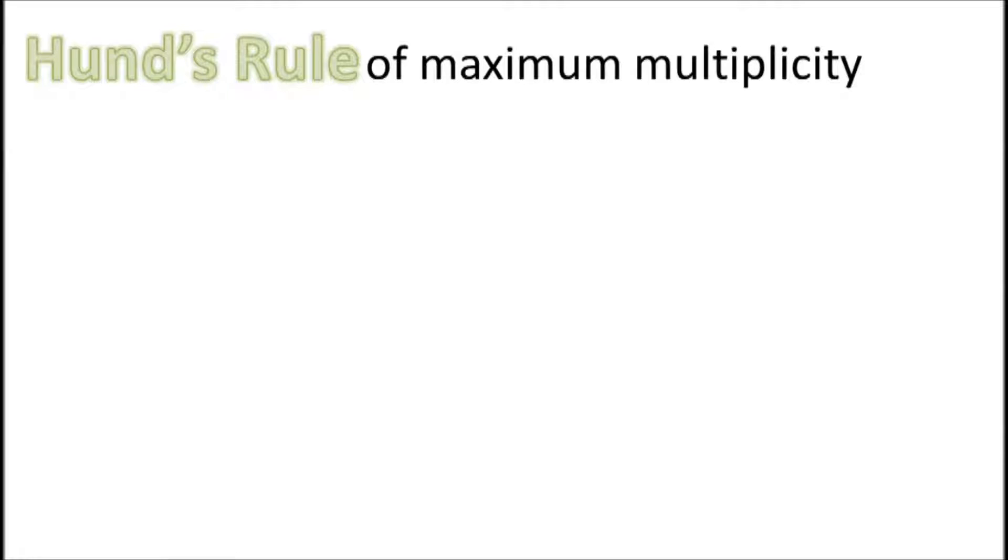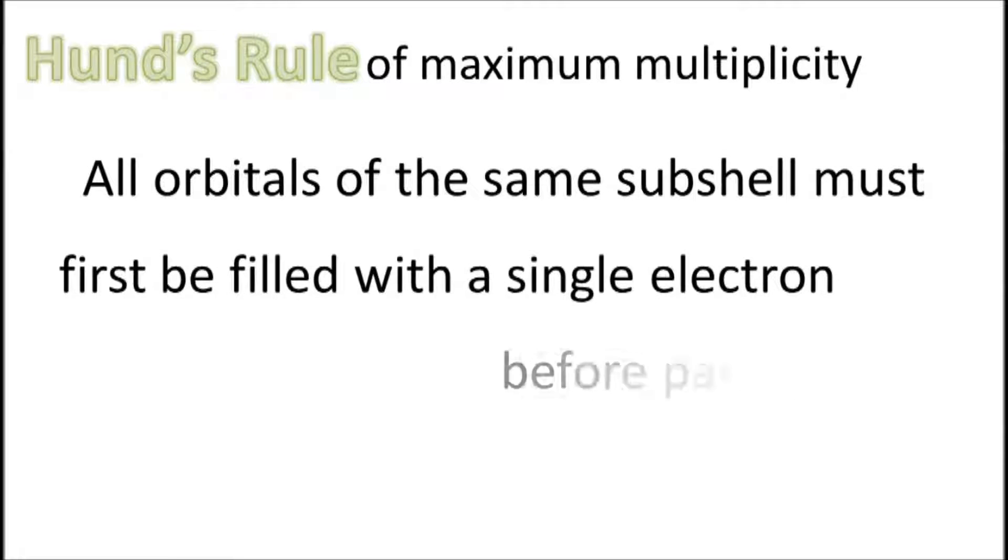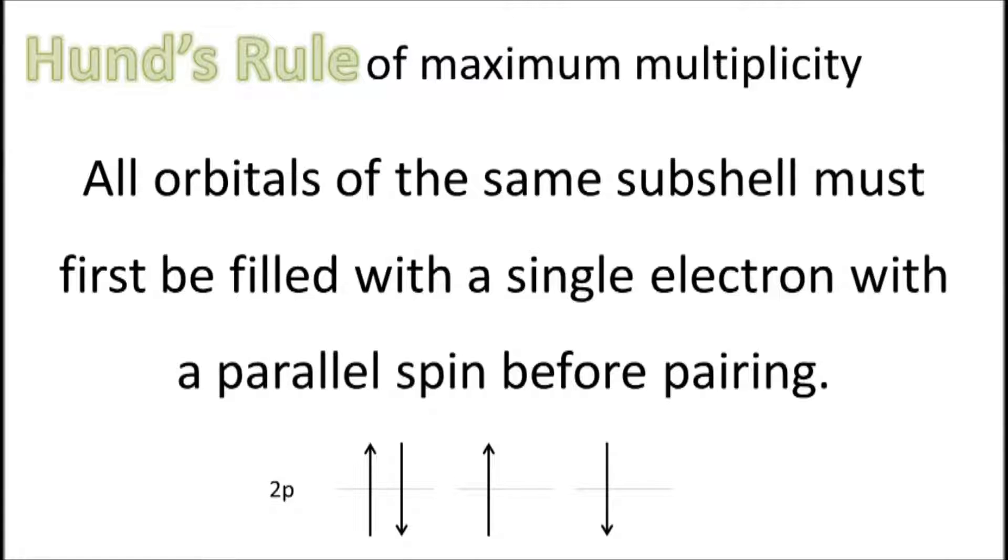Hund's rule of maximum multiplicity indicates that all orbitals of the same subshell must each first be filled with a single electron before pairing can occur. Furthermore, all orbitals with only one electron must have electrons with a parallel spin.